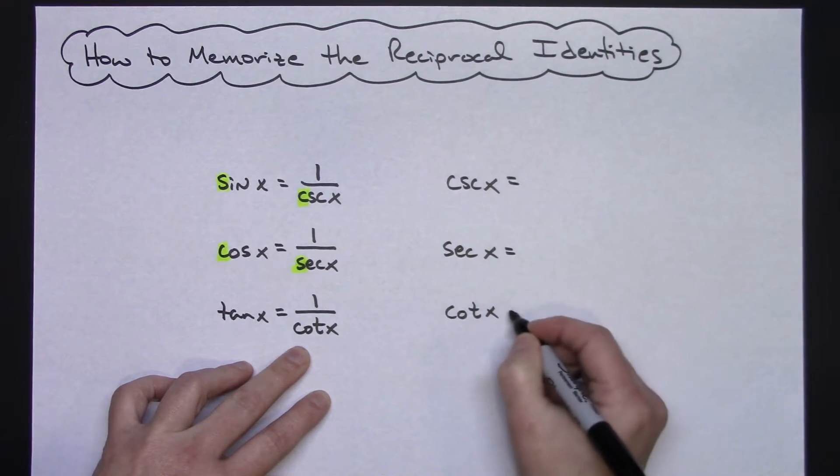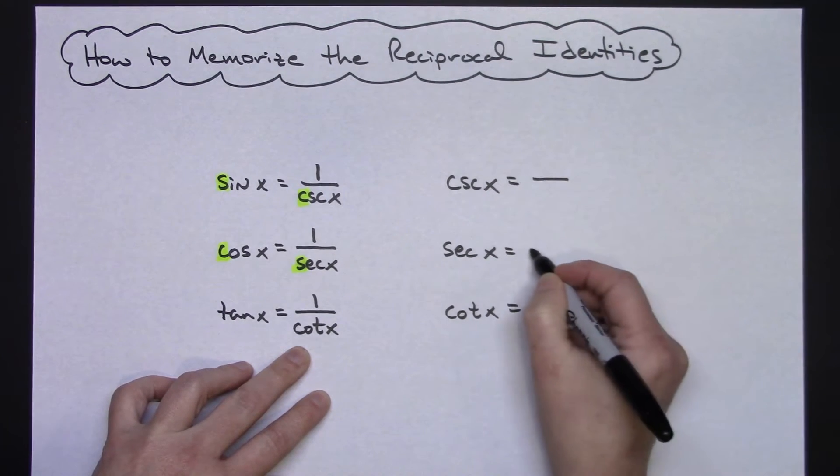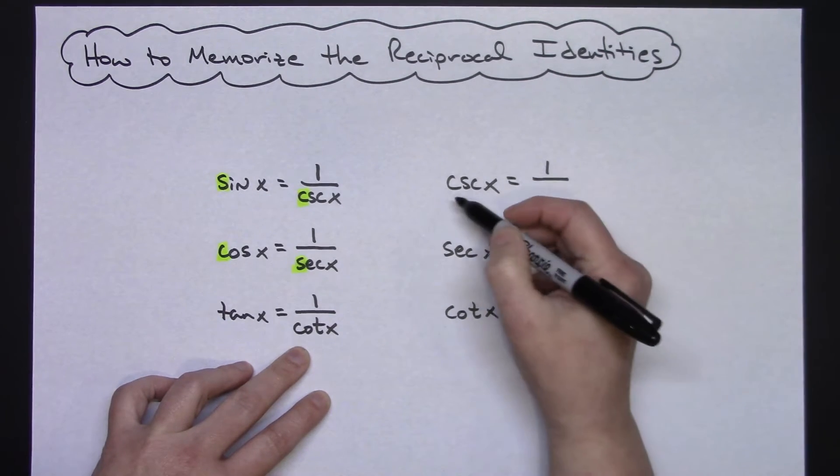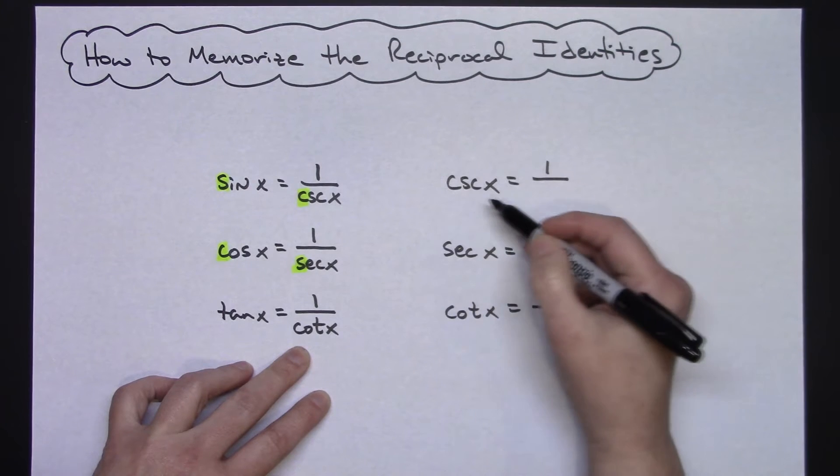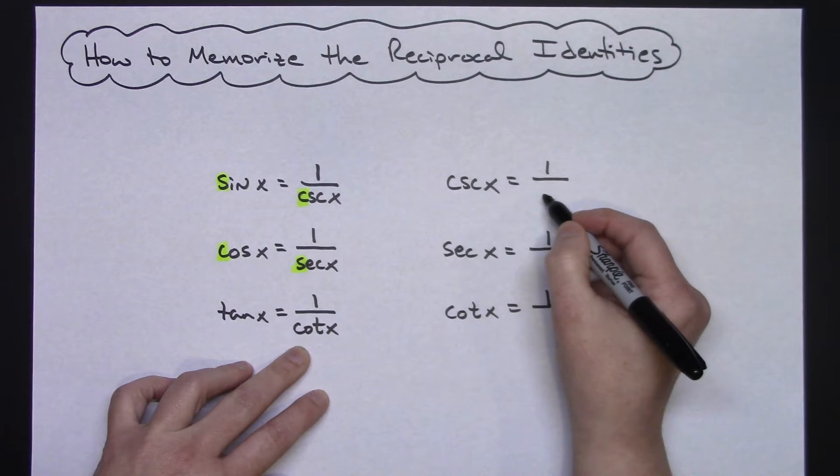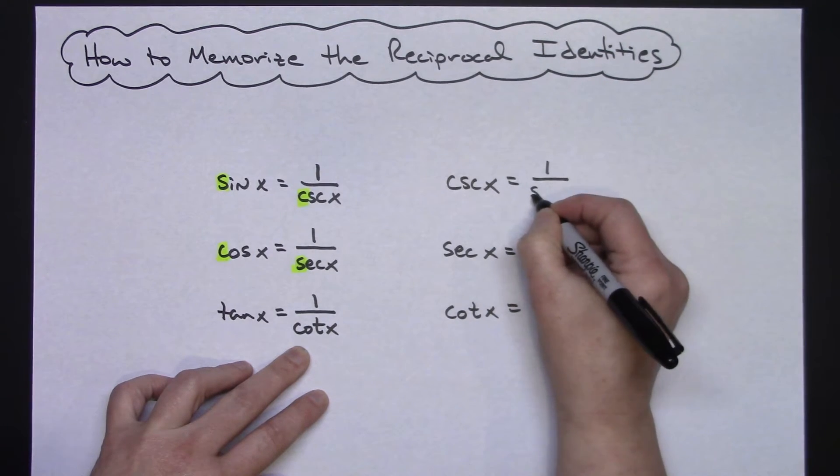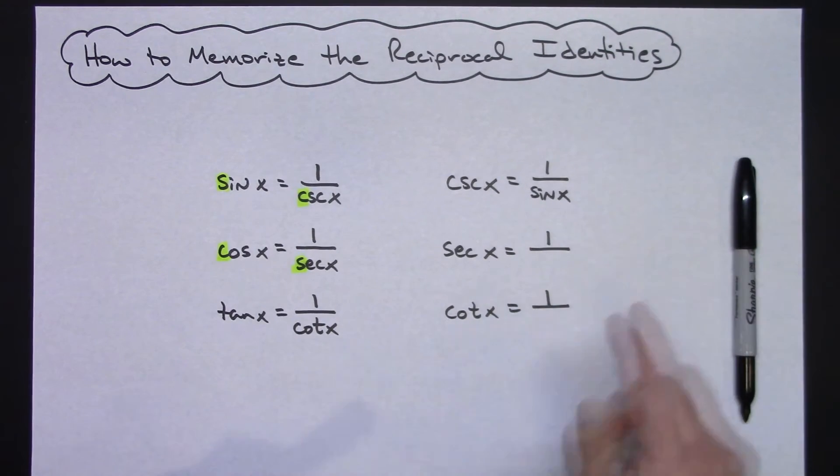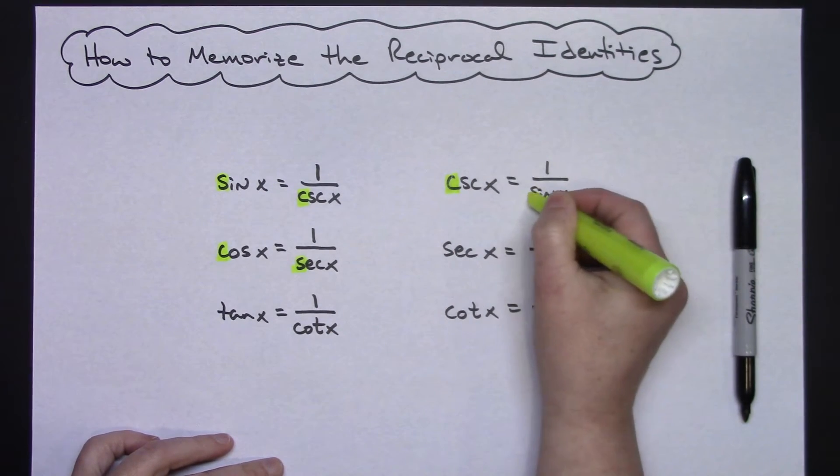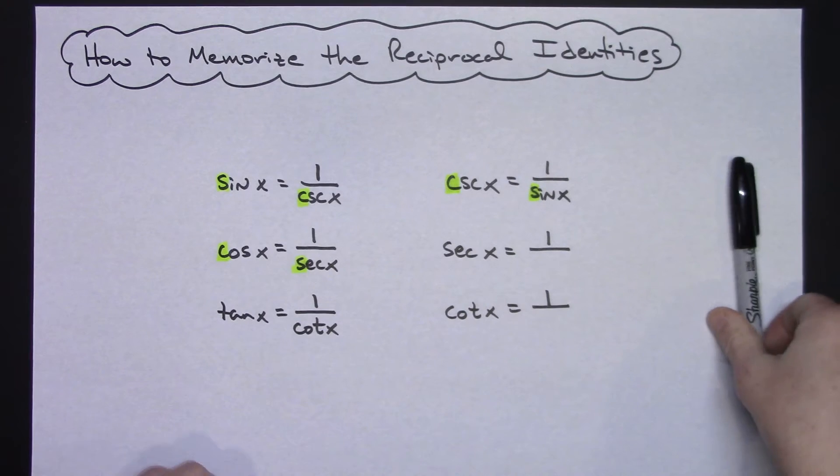The same rules apply for each one of these reciprocal identities, so I know that I will always have a one on top. And the first letter has to be the opposite. So this is cosecant, it starts with a C, so this one has to start with S, so it has to be the sine of x.